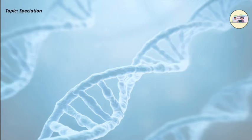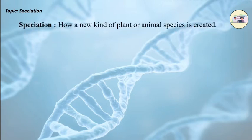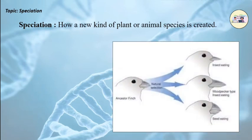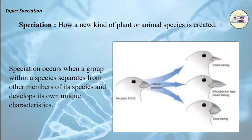Speciation: Speciation is how a new kind of plant or animal species is created. Speciation occurs when a group within a species separates from other members of its species and develops its own unique characteristics.